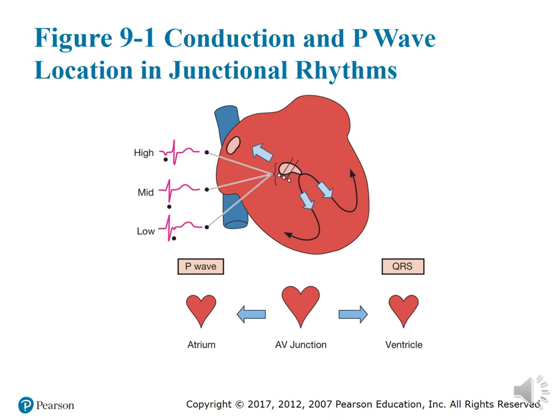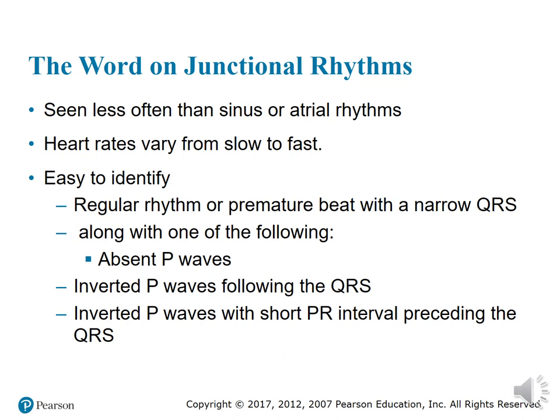If impulses originate low in the AV junction, they will reach the ventricles first, write the QRS, then reach the atria and write the P wave. The P wave will follow the QRS, and because the impulses must travel backwards to reach the atria, the P wave will be inverted. Impulses originating from low in the AV junction have an inverted P wave following the QRS.